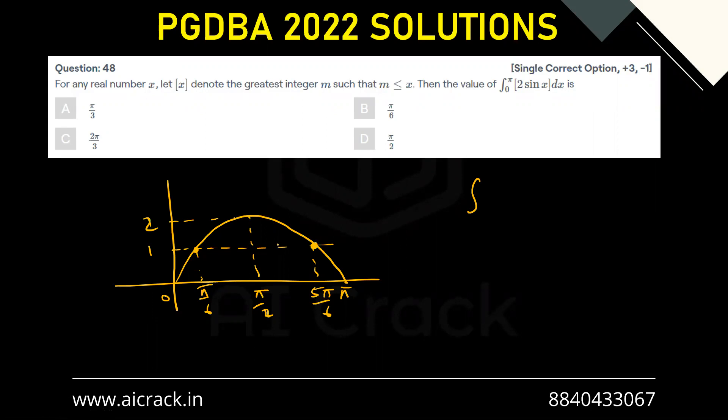From zero to π by 6, the function value is in between zero to 1. 2 sin x is between zero to 1, so basically GIF of that would be zero.